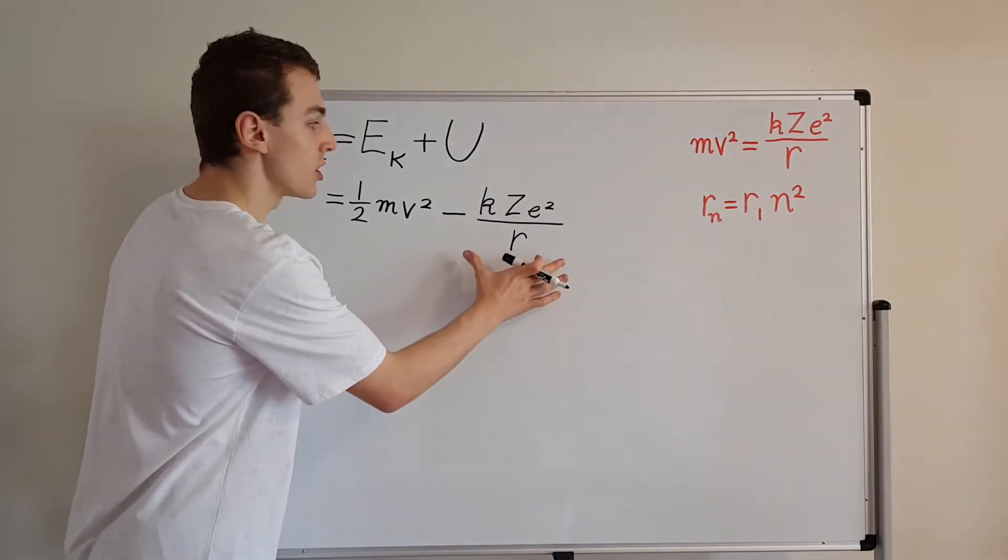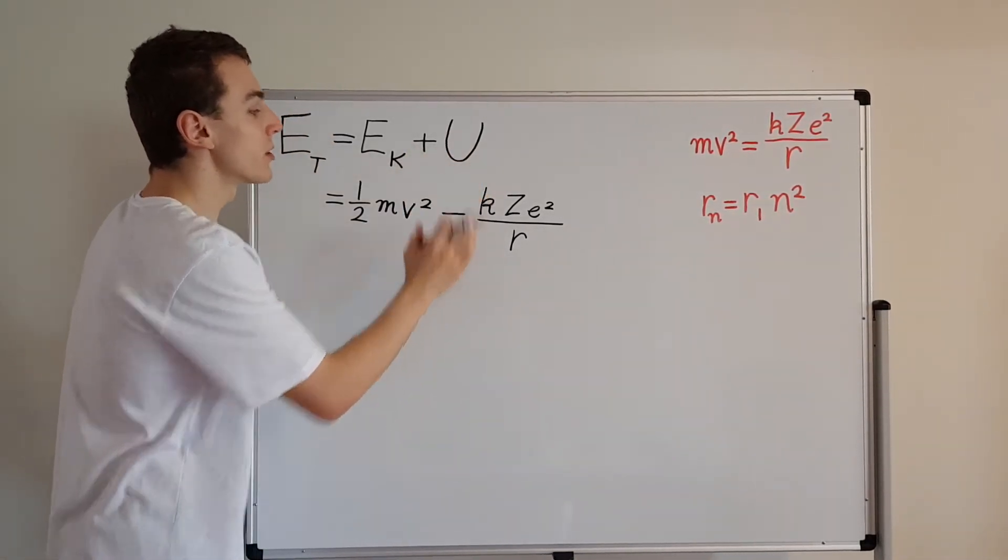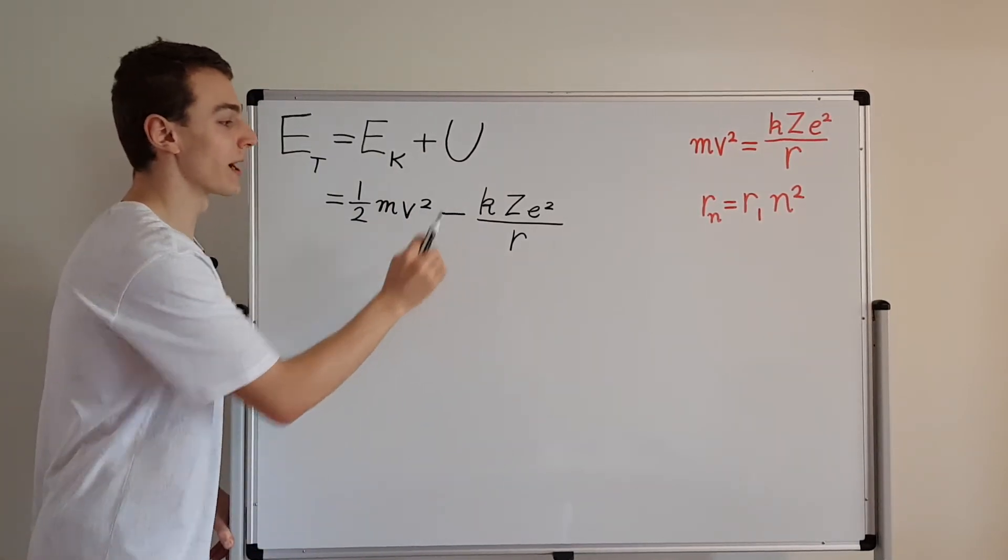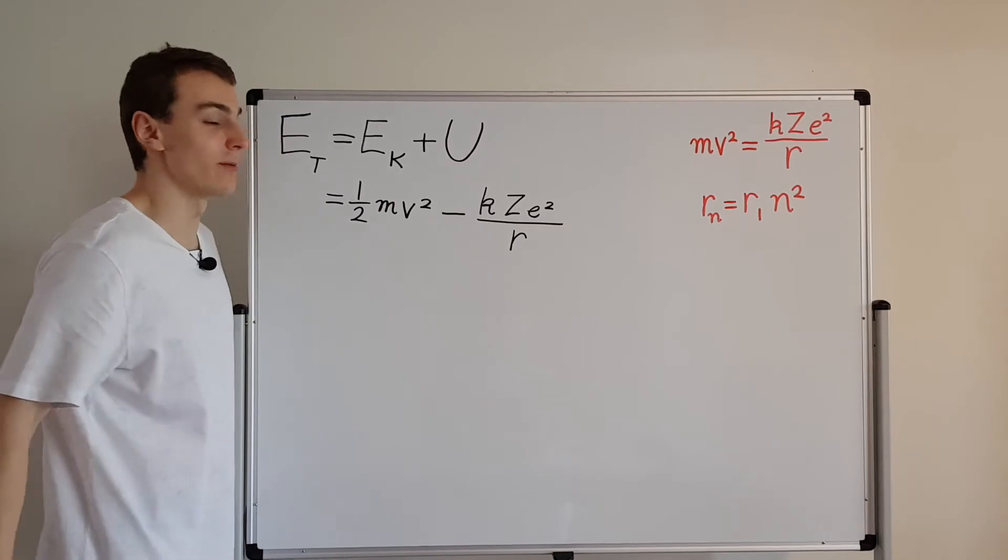So now we have an expression for the potential energy. So this is actually plus potential. But because the potential is negative, we have a minus sign over here. And this over here is the kinetic energy, 1 half mv squared.